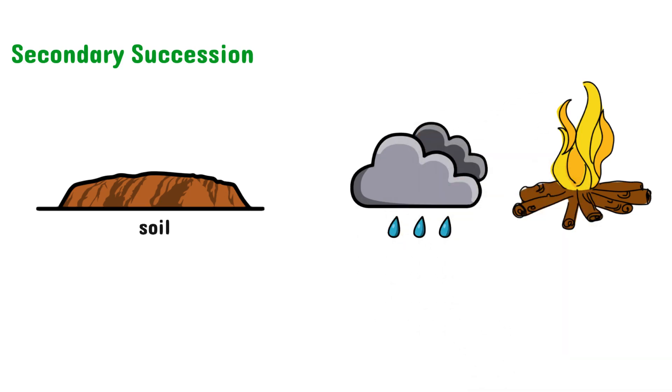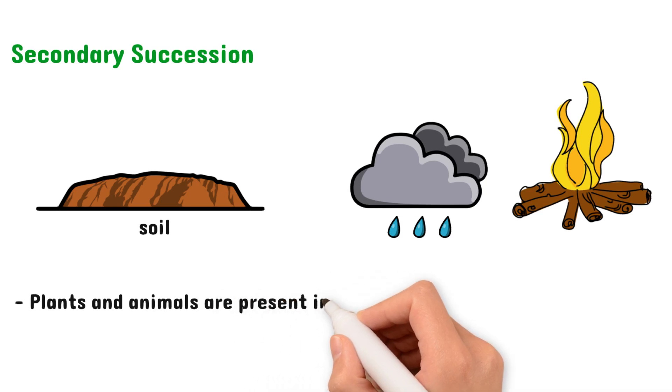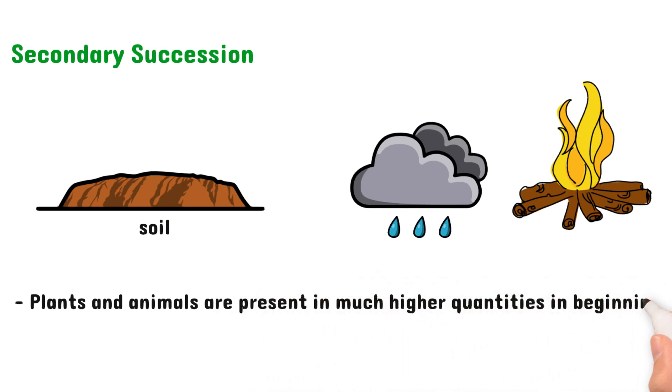Because the soil is already formed with roots and soil organisms, plants and animals present themselves in much higher quantities from the beginning.